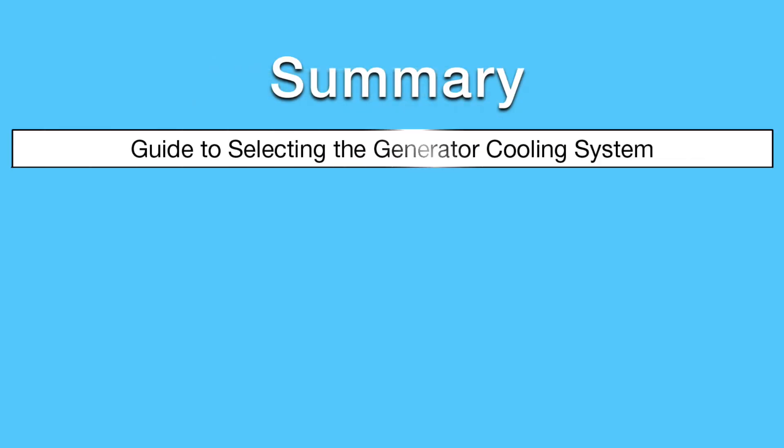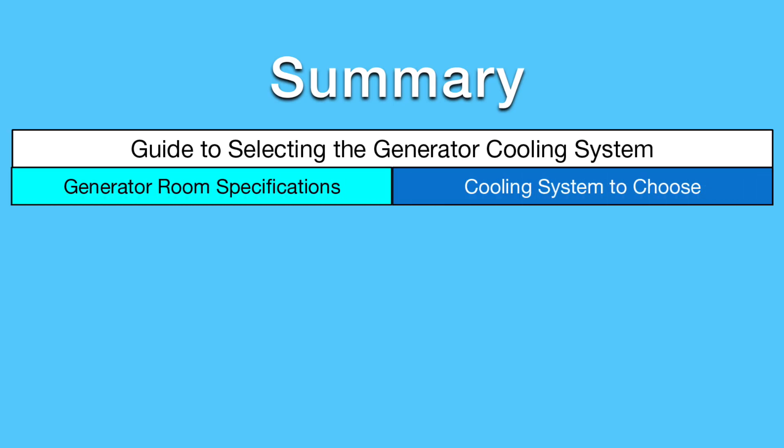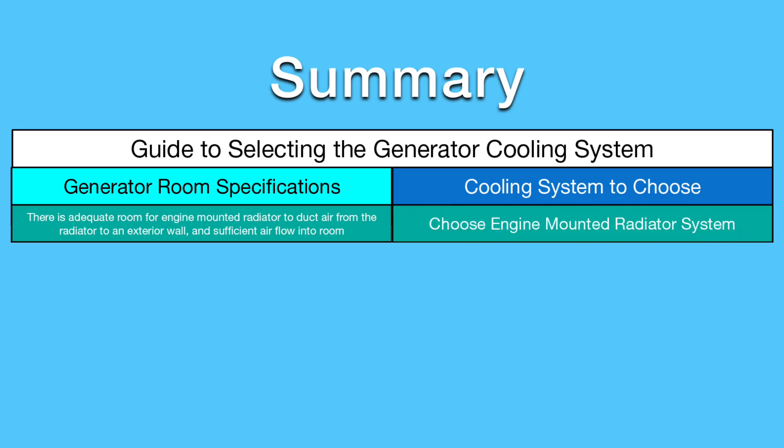In summary, here's a guide to selecting your generator's cooling system. Review the generator room specifications to choose the cooling system for the application. When there is adequate room for an engine mounted radiator to duct air from the radiator to an exterior wall and sufficient airflow into the room, choose an engine mounted radiator system.